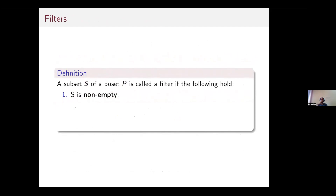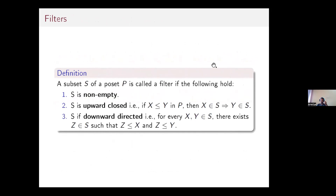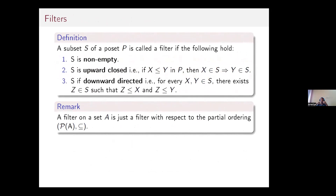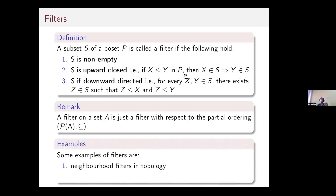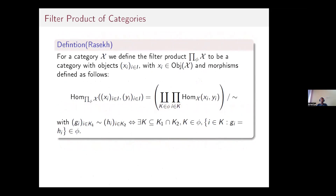A filter is a subset of a poset that is non-empty, upward closed, and downward directed. An example is a filter on a set with respect to the partial ordering given by the power set and inclusion. Other examples include neighborhood filters in topology and generic filters used in forcing techniques.